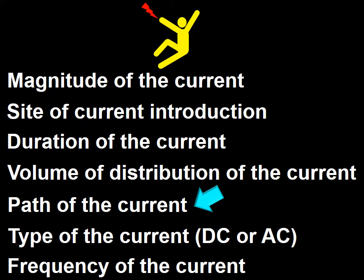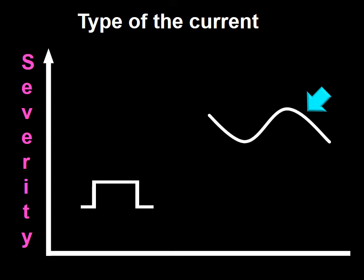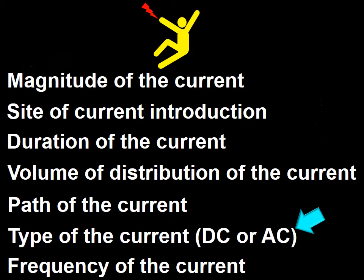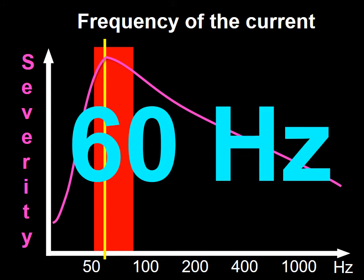In addition to the path of current, we have to consider the type of current. Direct current produces less severe clinical manifestations than alternating current. In addition, when dealing with alternating current, we have to take into account the frequency. Frequencies between 50 and 90 Hz are most dangerous. But the most dangerous of all is the one we use in our homes and at the hospital: 60 Hz.